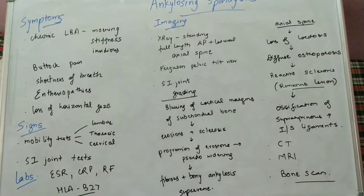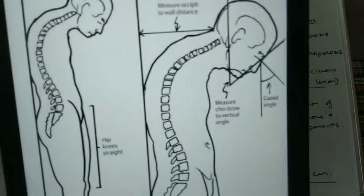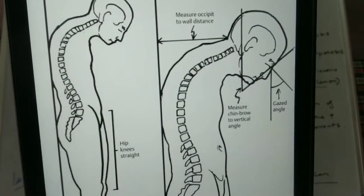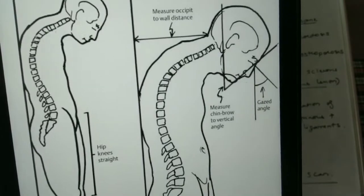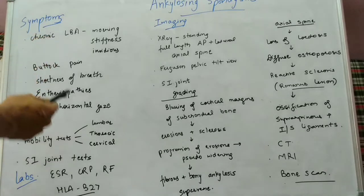As the deformity advances, the patient may complain of loss of horizontal gaze. The patient may present with a chin-on-chest deformity with loss of horizontal gaze. These were a few of the various symptoms with which the patient may present to us. The most common are low backache and buttock pain.